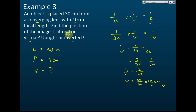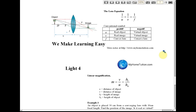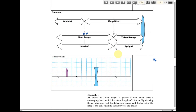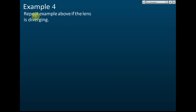Now, is the image real or virtual? We check the sign of v. V is positive when the image is real and negative when virtual. Since our answer is positive, the image is real. And normally when the image is real, it is inverted — as we can see from the summary chart, a real image is always inverted. So the image is real and inverted.